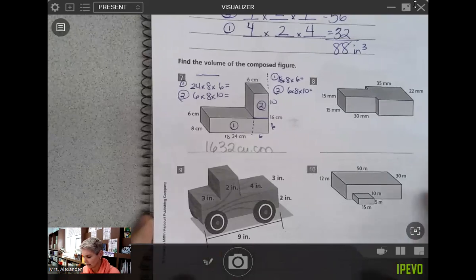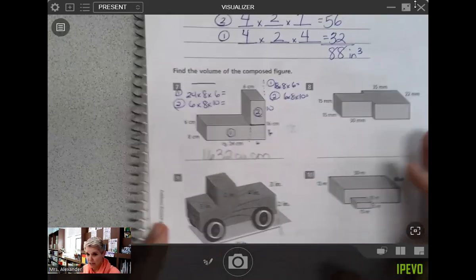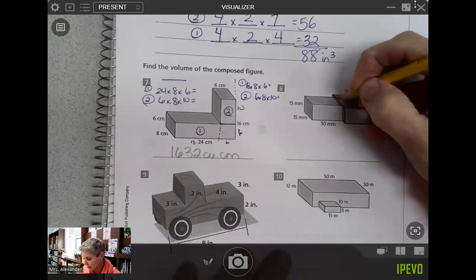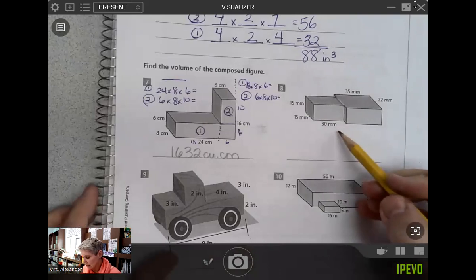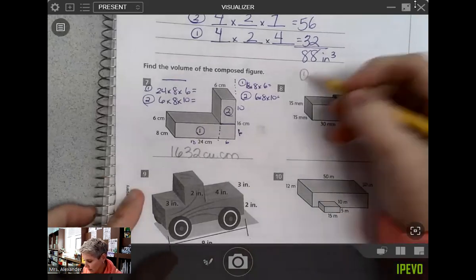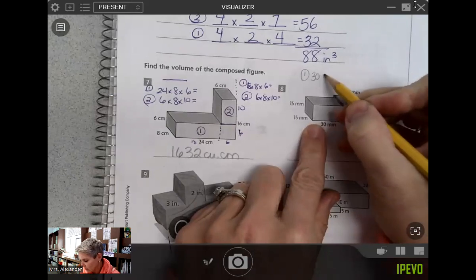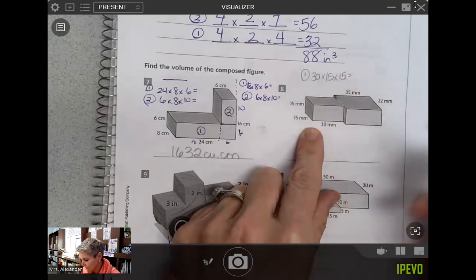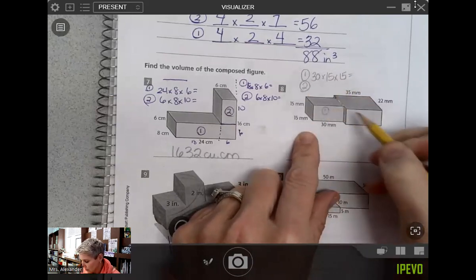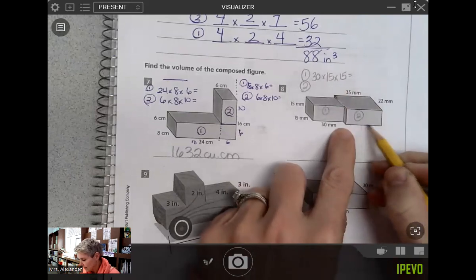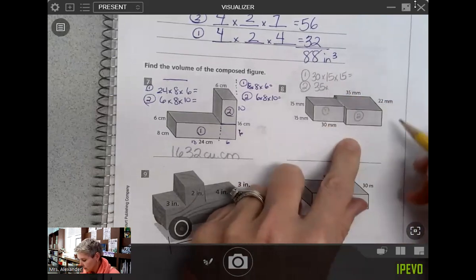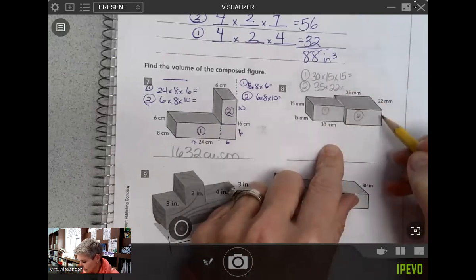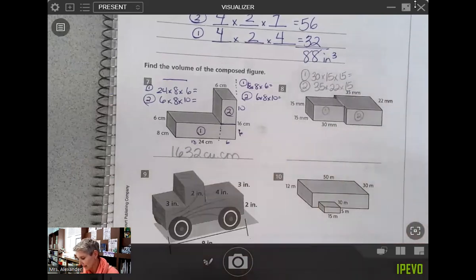Alright, there's that first one. A lot of you were working on that in class. Number 8 is very tricky, lots of big numbers, but if we work carefully, let's split this figure right there. Then you can see I have figure 1 would be a length of 30, a width of 15, and a height of 15. Figure 2, if I made this one, this will be 2. We have a length of 35, a width of 22, and a height of 15. So the heights match on that one.